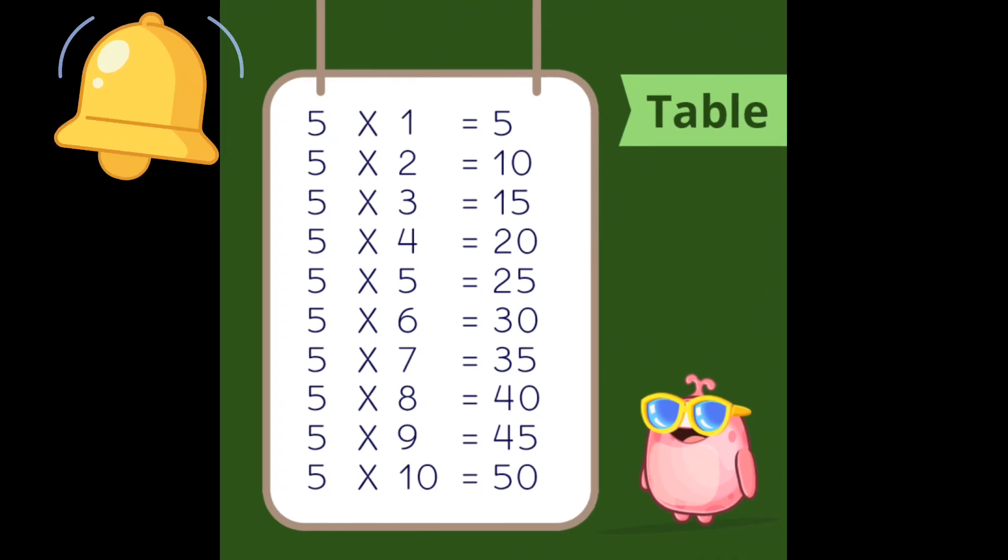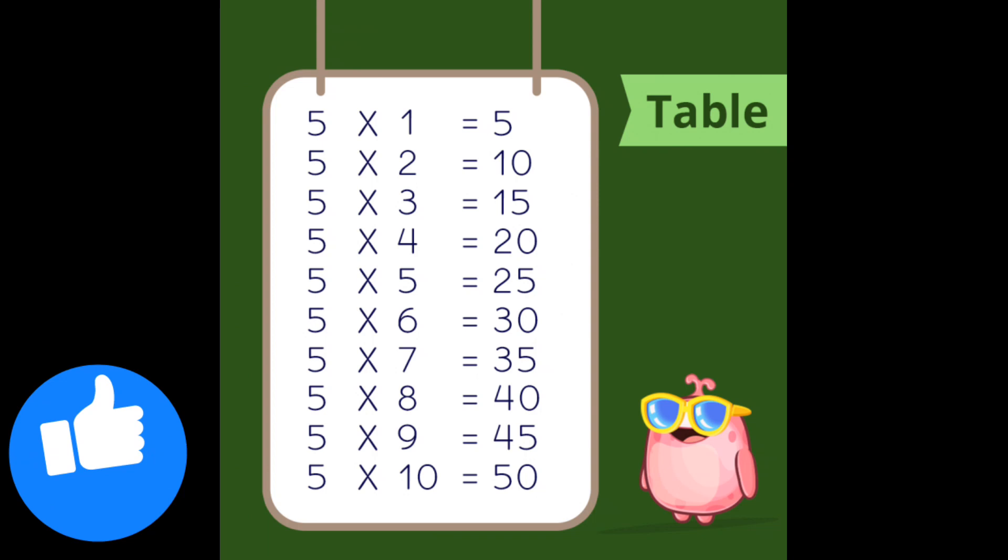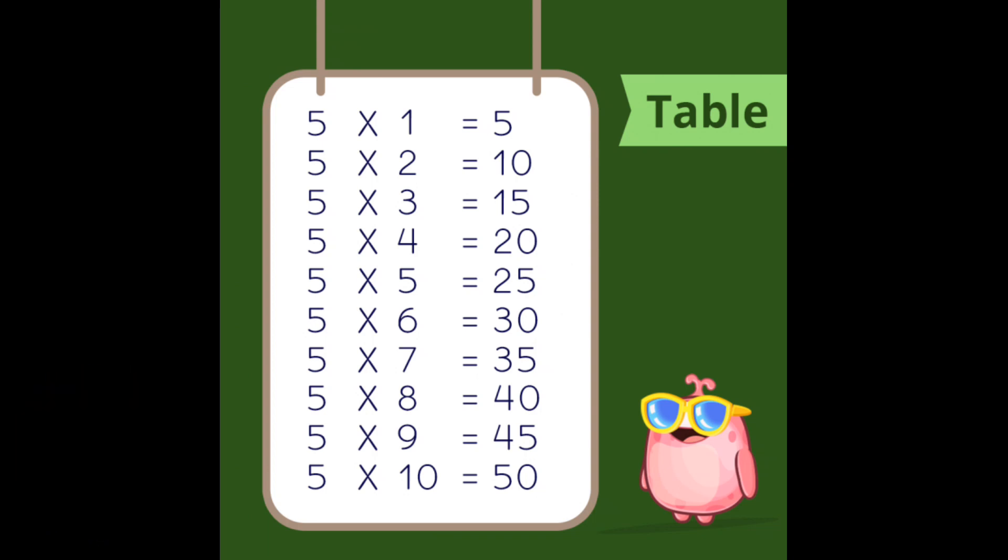Five ones are five. Five twos are ten. Five threes are fifteen. Five fours are twenty. Five fives are twenty-five. Five sixes are thirty. Five sevens are thirty-five. Five eights are forty. Five nines are forty-five.